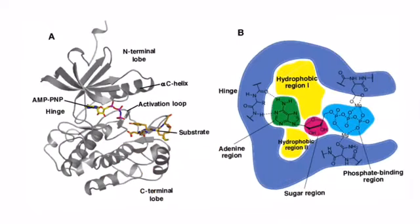Protein kinases are enzymes that belong to a very extensive family of proteins that share a conserved catalytic core. In the N-terminal extremity of the catalytic domain there is a glycine-rich stretch of residues. In the central part there is a conserved aspartic acid. A protein kinase is a kinase enzyme that modifies other proteins by chemically adding phosphate groups to them.